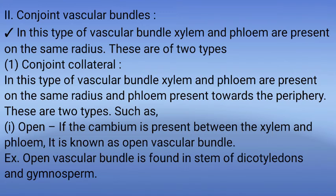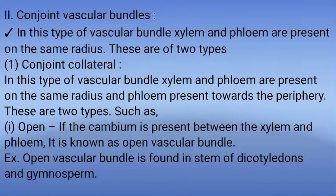Second type: Conjoint Vascular Bundles. In this type of vascular bundles, xylem and phloem are present on the same radius. These are of two types: Open Vascular Bundles and Closed Vascular Bundles. In this type, xylem and phloem are present on the same radius, with phloem present towards the periphery.